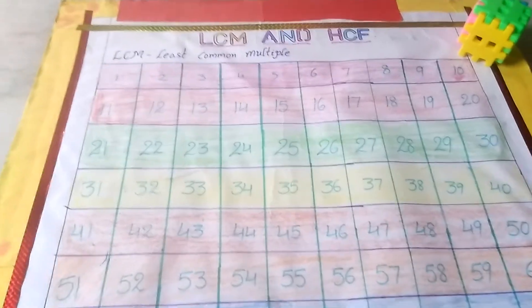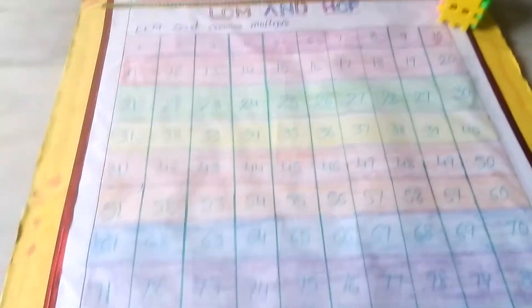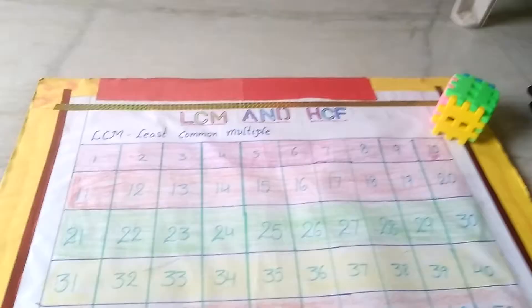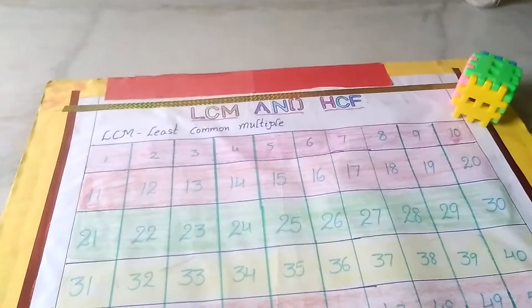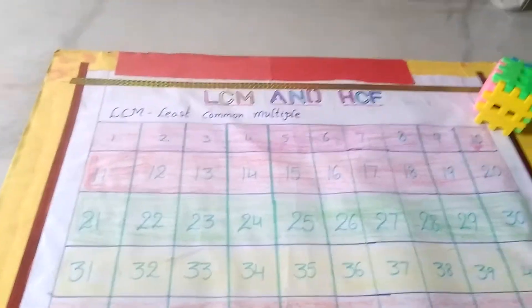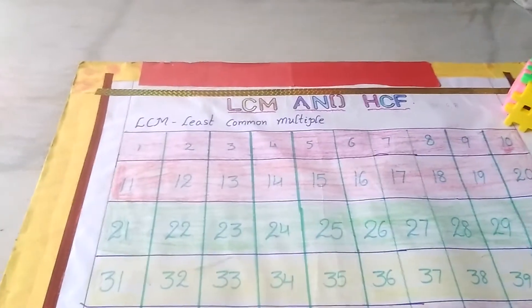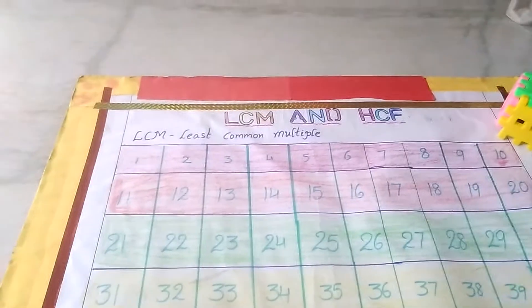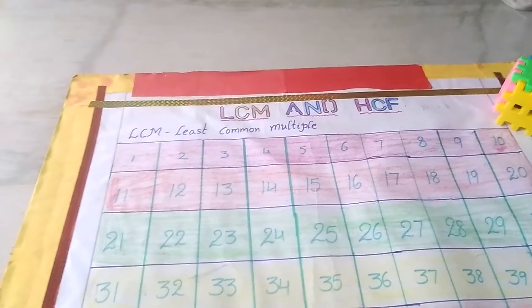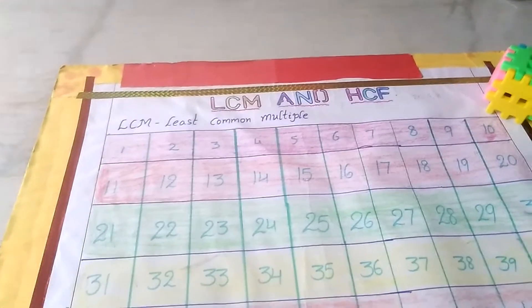On the chart, I draw 1 to 100 numbers. LCM is nothing but Least Common Multiple. Multiples is nothing but tables.